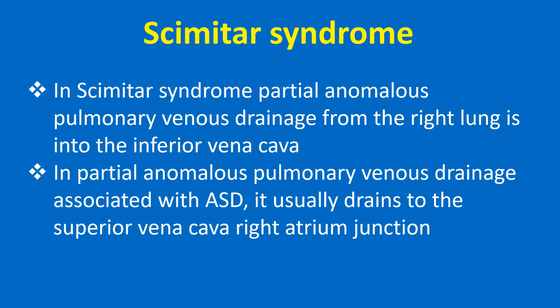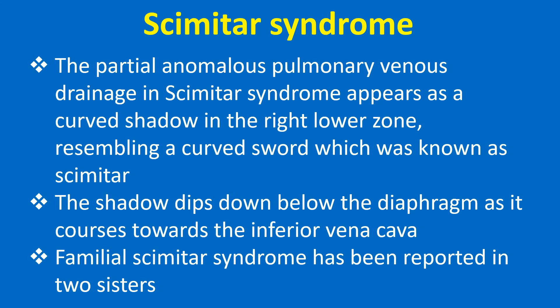In Scimitar syndrome, partial anomalous pulmonary venous drainage from the right lung is into the inferior vena cava. In partial anomalous pulmonary venous drainage associated with ASD, it usually drains to the superior vena cava–right atrium junction. The partial anomalous pulmonary venous drainage in Scimitar syndrome appears as a curved shadow in the right lower zone resembling a curved sword, which was known as a scimitar. The shadow dips down below the diaphragm as it courses towards the inferior vena cava.